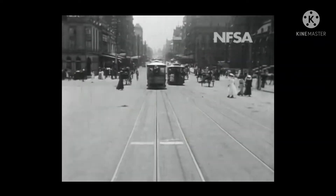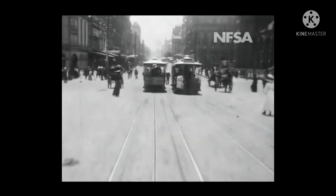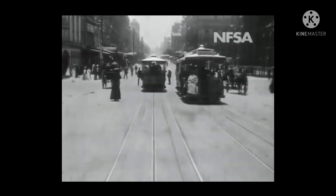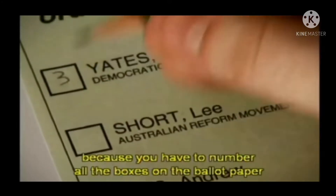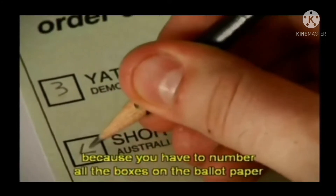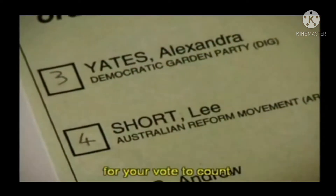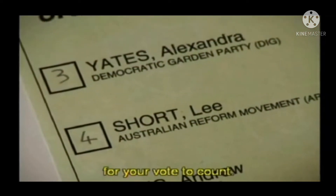In a representative democracy, the people do not get to decide on particular issues. Instead, the people have to vote for a representative that then votes on the particular issues on their behalf.